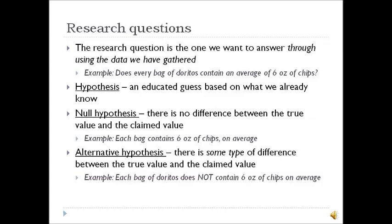In some types of research we may go in without a hypothesis, but those types will not be studied extensively in this course, so for our purposes you will make a hypothesis. The null hypothesis is that there is no difference between the true value and the claimed value, or that no change has occurred. For example, in our Doritos question, we would say each bag contains six ounces of chips on average. The alternative hypothesis is that there is some type of difference between the true value and the claimed value — for example, that each bag of Doritos does not contain six ounces of chips on average.